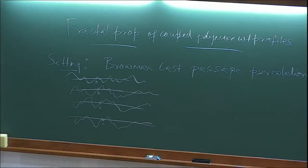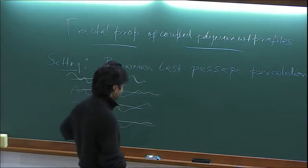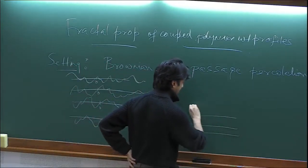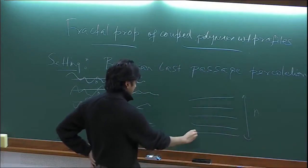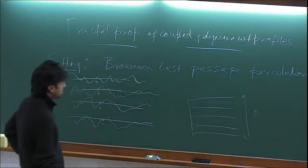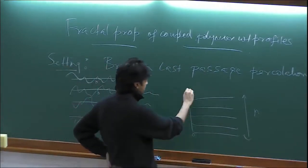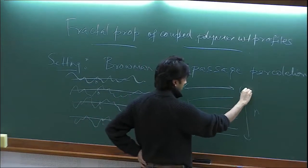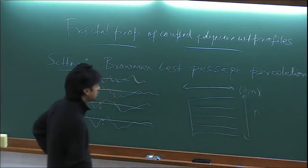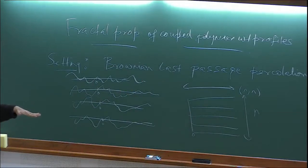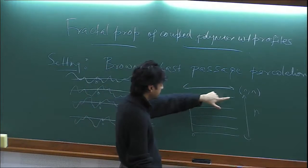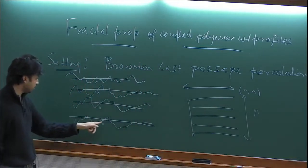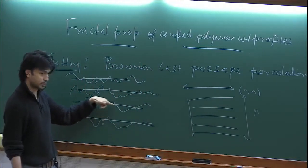This is the basic noise space: you have independent Brownian motions, let's say N of them. You look at distance also N in this direction, so this is the point N comma N. For each of these paths, you have an independent Brownian motion. Now what you want to do is go from here to here using paths which are oriented — taking only steps to the right or vertically jumping to the next level.